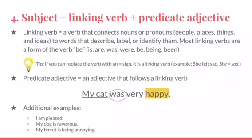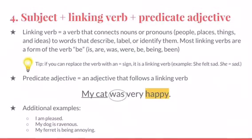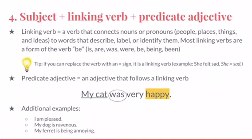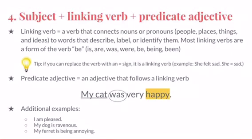Basic Sentence Pattern Number 4: Subject plus Linking Verb plus Predicate Adjective. A linking verb is a verb that connects nouns or pronouns — people, places, things, and ideas — to words that describe, label, or identify them. Most linking verbs are a form of the verb 'be,' such as is, are, was, were, be, being, and been. Here's a tip: if you can replace the verb with an equal sign and the sentence still makes sense, then it's a linking verb. For example, 'She felt sad' — replacing 'felt' with an equal sign gives 'she equals sad,' which works.